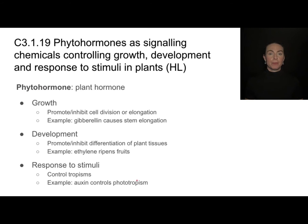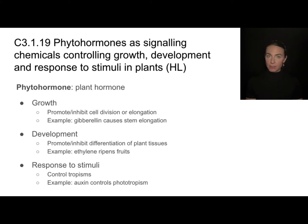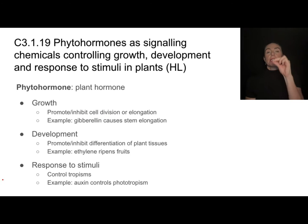That phototropism is controlled by a plant hormone called auxin. Plant hormones are called phytohormones — phyto means plant — so this literally means plant hormone, and they control many different things regarding the physiology of plants, just like your hormones do. They can control growth, meaning they can either promote or inhibit cell division — the adding on of new cells — or even cell elongation.